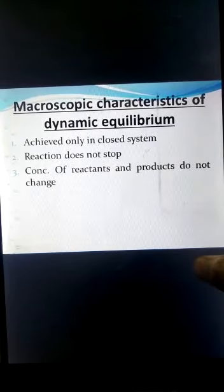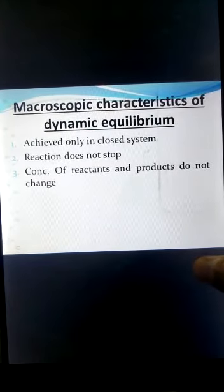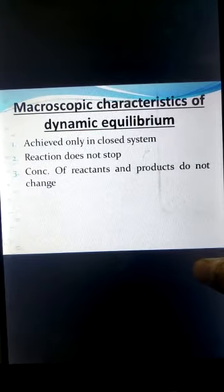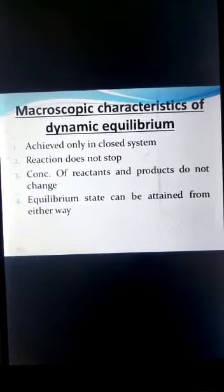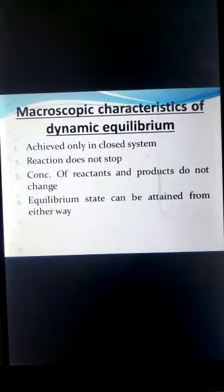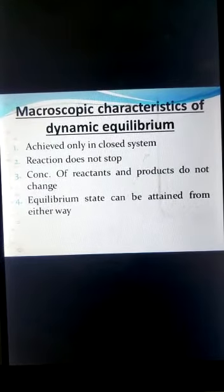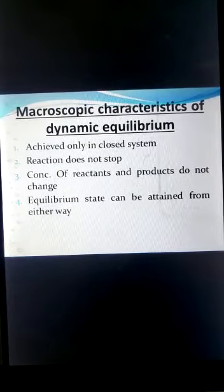The macroscopic characteristics of dynamic equilibrium are: it can only be achieved in a closed system — it cannot occur in an open system because external factors can disturb it. The reaction does not stop; concentrations of reactants and products do not change; and physical properties like color and temperature also do not change. Equilibrium can be attained from either direction — from reactants to products or from products to reactants.